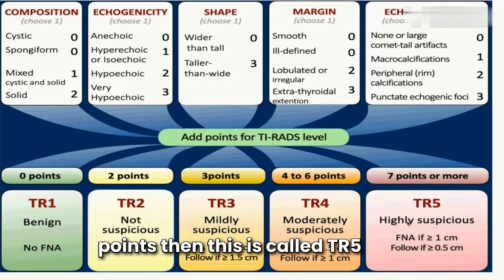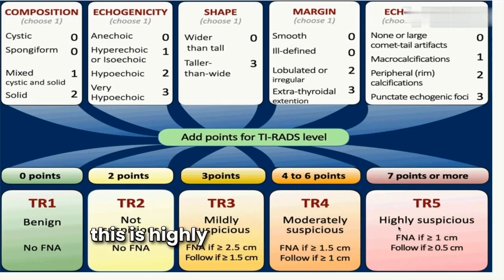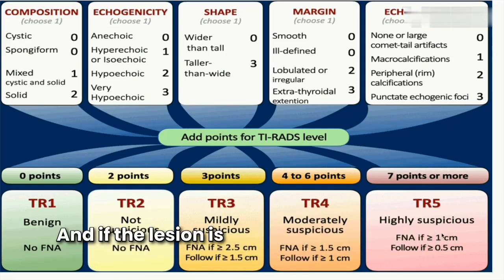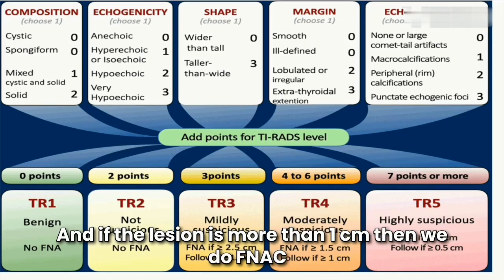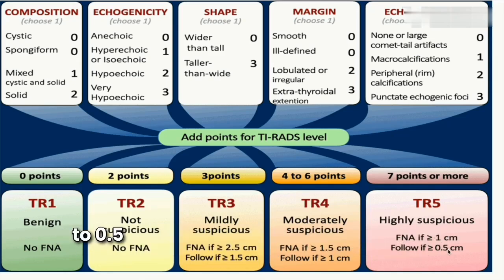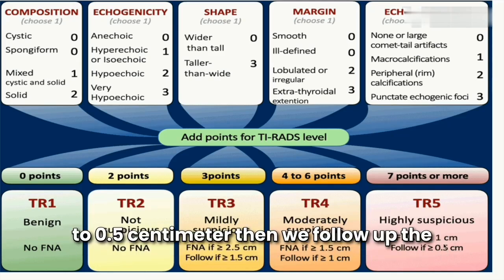If we get seven or more points, this is TR5 — highly suspicious for thyroid malignancy. For TR5, if the lesion is more than 1 cm we perform FNAC, and if the lesion is greater than or equal to 0.5 cm we follow up the patient.